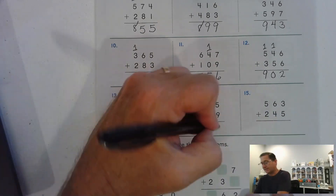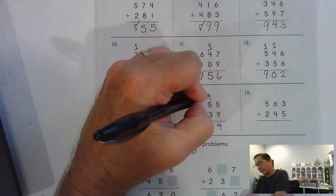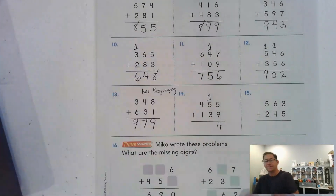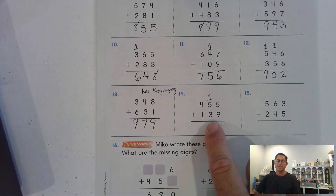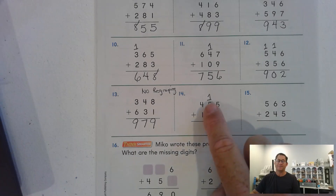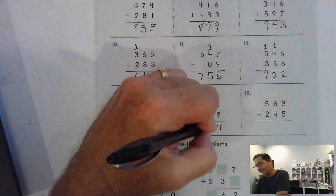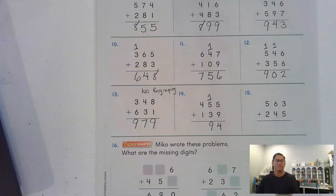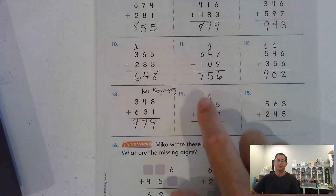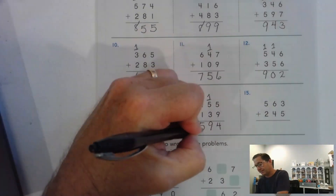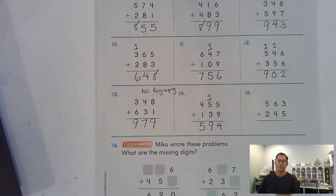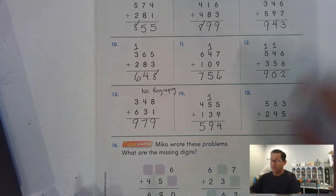Number fourteen: nine and five, fourteen ones — we're going to have to regroup as one ten and four ones. Move to the tens: five and one is six, plus three more is nine tens — don't have to regroup the tens. Hundreds: four hundred and one hundred is five hundred — we don't have to regroup the hundreds.